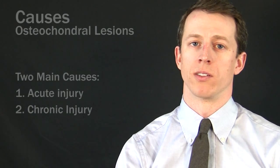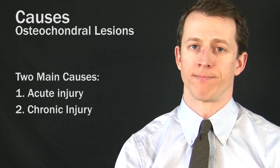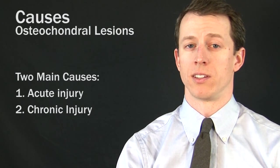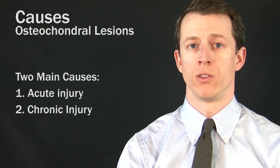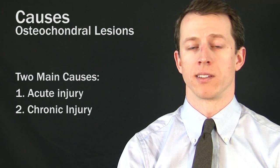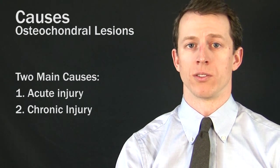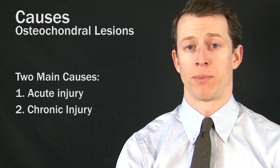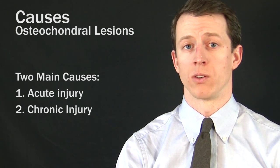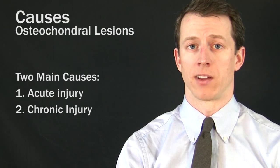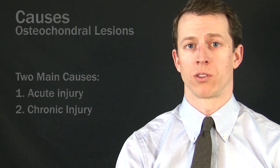Why does a Talar Osteochondral Lesion develop? These lesions are thought to develop from one of two main mechanisms: either an acute injury, such as a bad sprain or twist to the ankle, or because of chronic repetitive overload of the ankle joint.